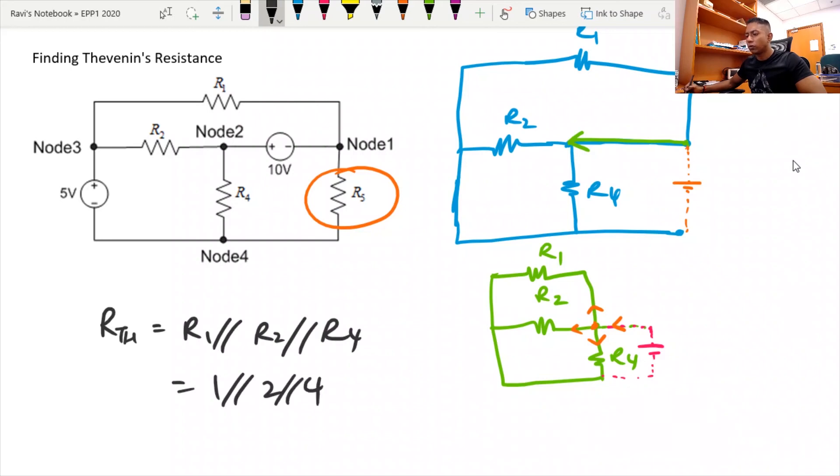parallel to 4, and that will give you a resistance of 0.4 ohms. Okay, so that is how you approach this question to find the Thevenin resistance. Thank you.